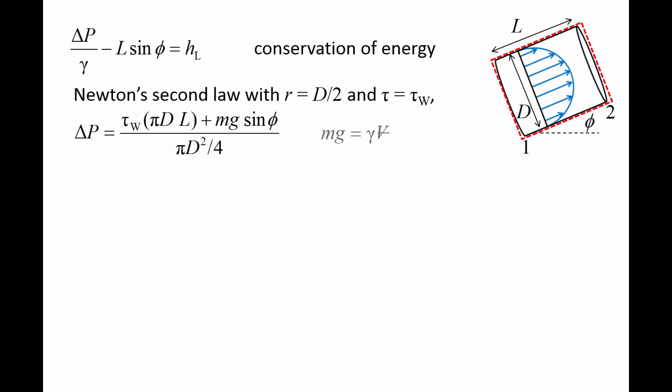The weight of the fluid in the pipe can be rewritten as gamma times the volume. The volume of the pipe is L times the area pi d squared over 4. Plugging in the expression for mg and rearranging the equation, we obtain delta p over gamma minus L sin phi equals 4 tau wL over gamma d. Comparing the conservation of energy equation with Newton's second law, we now have an expression for the head loss, hL equals 4 tau w over gamma times L over d.